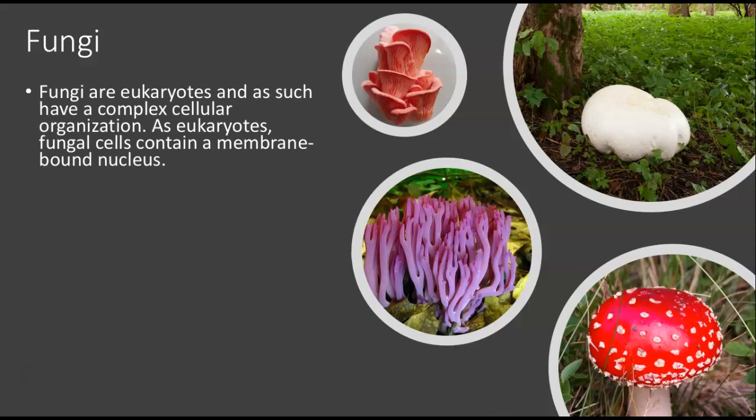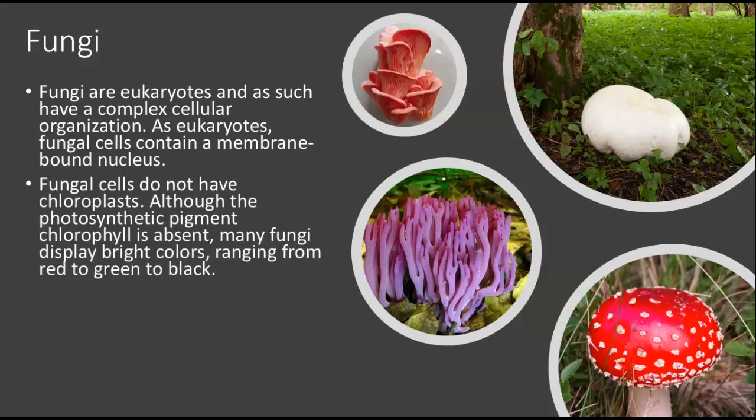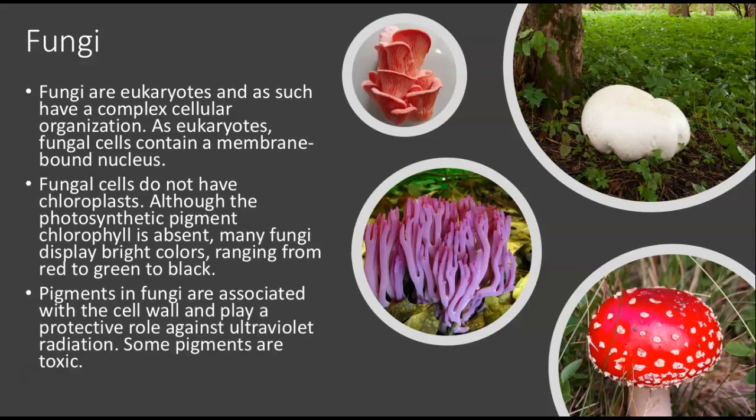Fungi, as eukaryotes, have a complex cellular organization. Fungal cells contain a membrane-bound nucleus and organelles. They do not have chloroplasts — the photosynthetic pigment chlorophyll is absent. Many fungi are able to display bright colors ranging from reds to greens to black, but they do not photosynthesize. Pigments in fungi are associated with the cell wall and play a protective role against UV radiation, and some pigments are toxic.